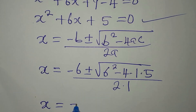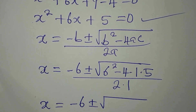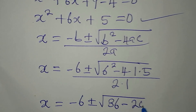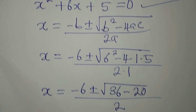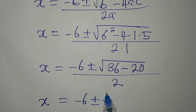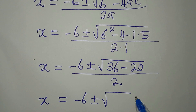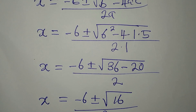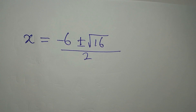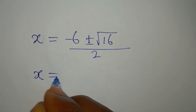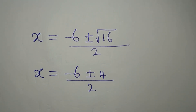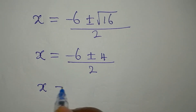So x equals negative 6 plus or minus the square root of 36 minus 20, divided by 2. That gives us the square root of 16 inside, and luckily 16 is a perfect square. So x equals negative 6 plus or minus 4, divided by 2.